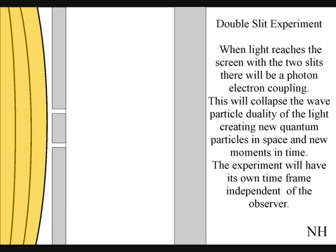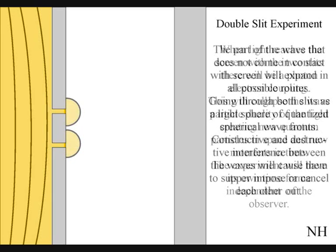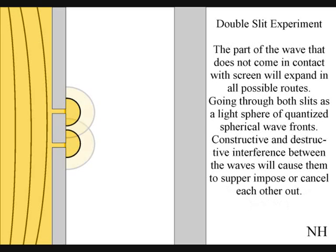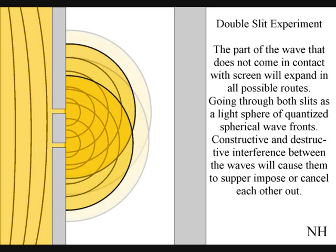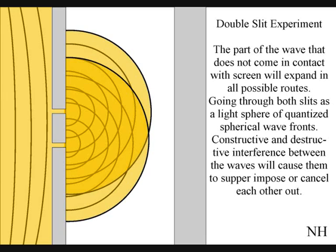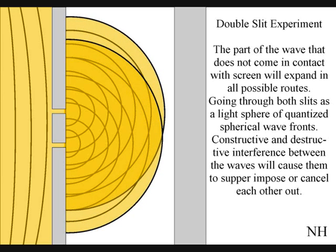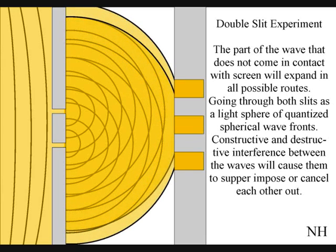Creating new quantum particles in space and new moments in time. The part of the wave that does not come in contact with the screen will expand in all possible routes, going through both slits. Interference between the waves will cause them to superimpose or cancel each other out. When this wave function comes in contact with the screen, it will collapse, creating moments of time and quantum particles in the shape of an interference pattern.